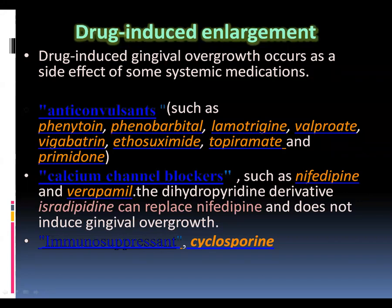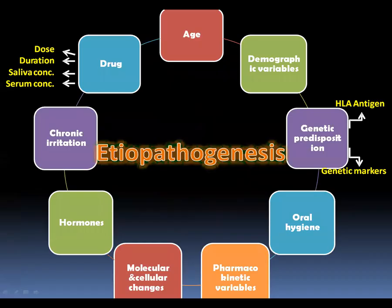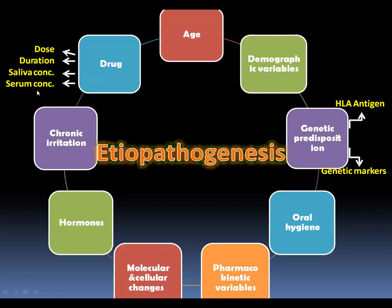The first is anticonvulsant drugs like phenytoin and phenobarbitone, which cause growth of gingival tissue. The second is calcium channel blockers such as nifedipine, used in hypertension. The third is immunosuppressant drugs like cyclosporine, used after organ transplant to prevent organ rejection. Regarding drug factors, the dose, duration of administration, and concentration of the drug in the saliva and serum after biotransformation in the liver all matter.